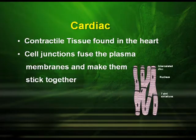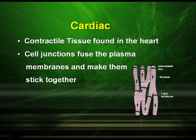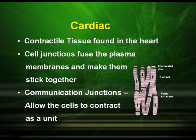The cardiac tissues are the contractile tissues found in the heart. Here, the cell junctions fuse the plasma membranes and make them stick together. They have communication joints which allow the cells to contract as a unit.